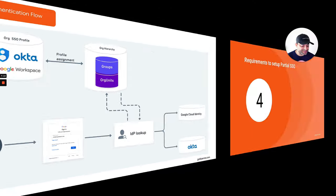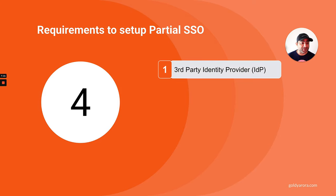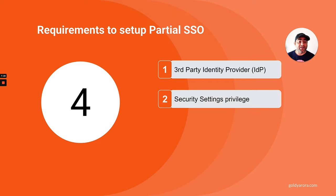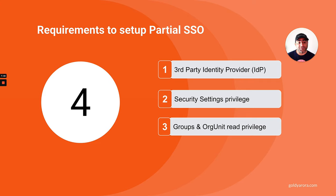Before the live demo, let's cover the logistics and requirements to set up Partial Single Sign-On. First, you'll need a third-party identity provider such as Okta, ADFS, or similar. Second, you need the right admin privileges: if you're a super admin that's fine; if you're a delegated administrator, you'll need the Security Settings privilege plus Groups and OrgUnit read privilege.